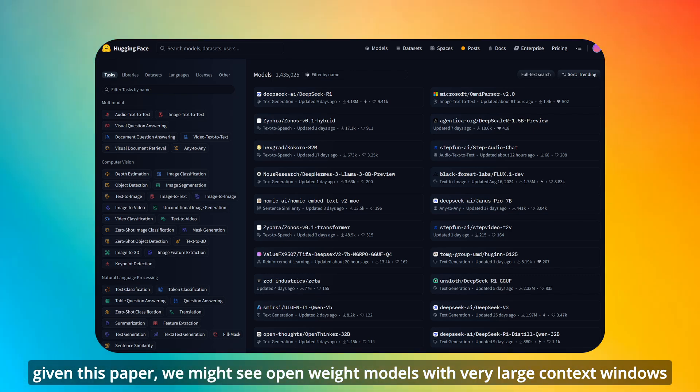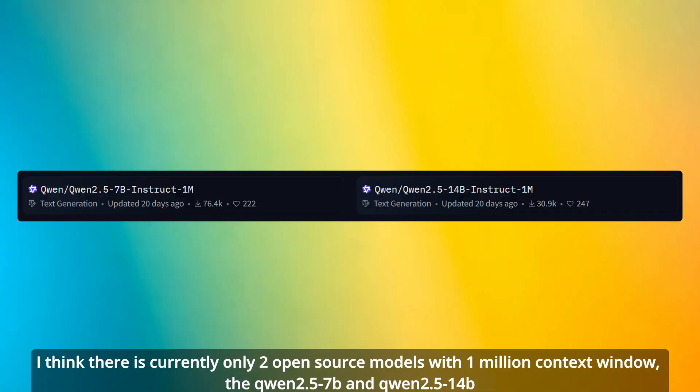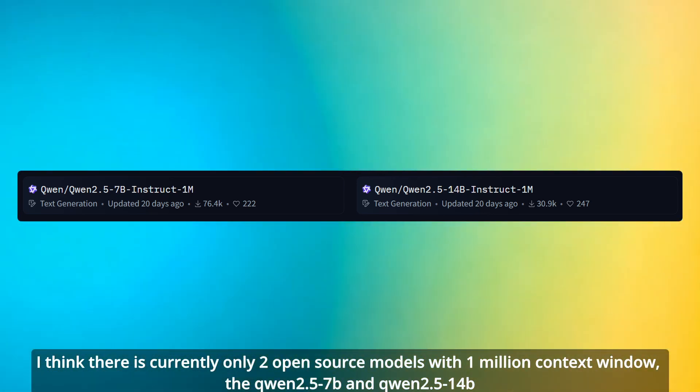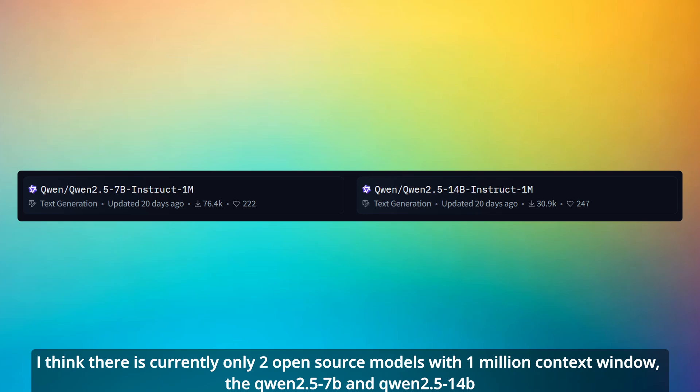Given this paper, we might see open-weight models with very large context windows. I think there are currently only two open-source models with 1 million context windows: the Qwen 2.5 7B and Qwen 2.5 14B.